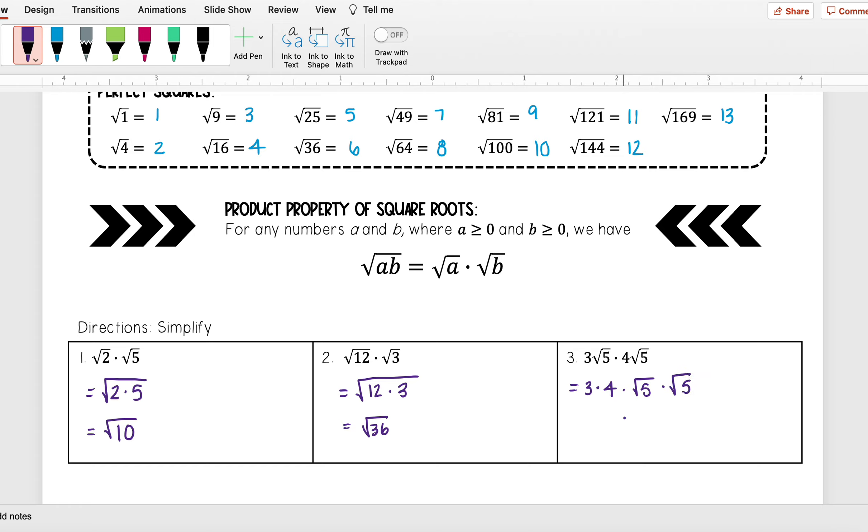Well, 3 times 4, I get 12. Now this is the square root of 5 times 5, which is just the square root of 25.